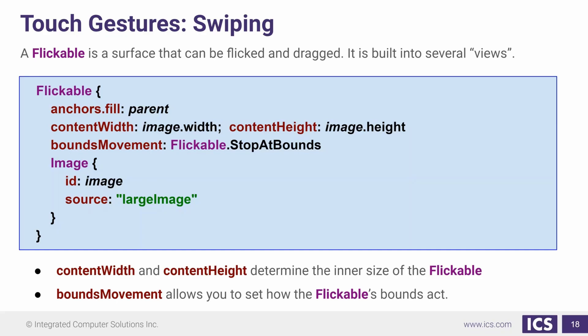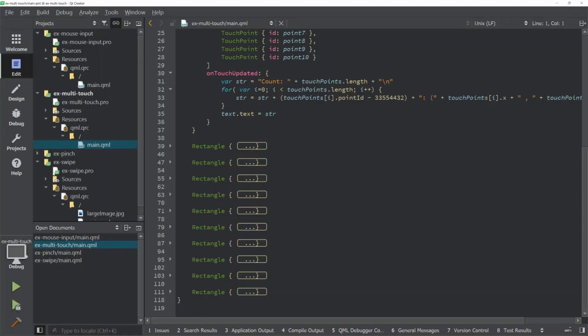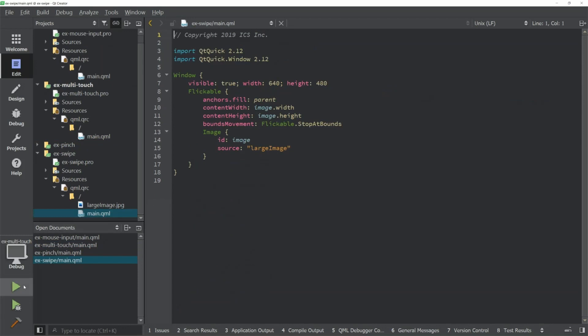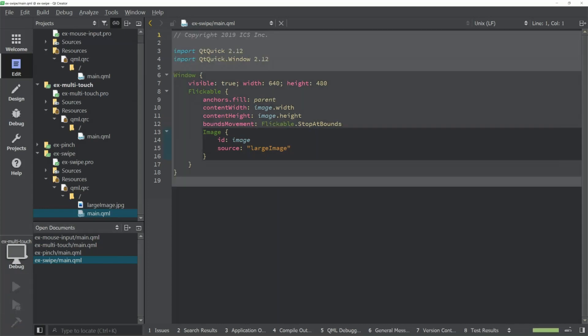I'll show you now an example of our swipe and what happens when we change the bounds. So right here, we have basically what was in the example. Here's our image. It's in a Flickable. The contentWidth and height is set to that of the image and we're stopping at the bounds.